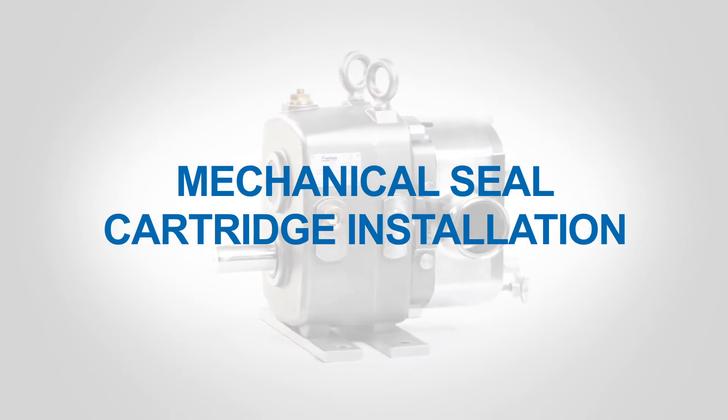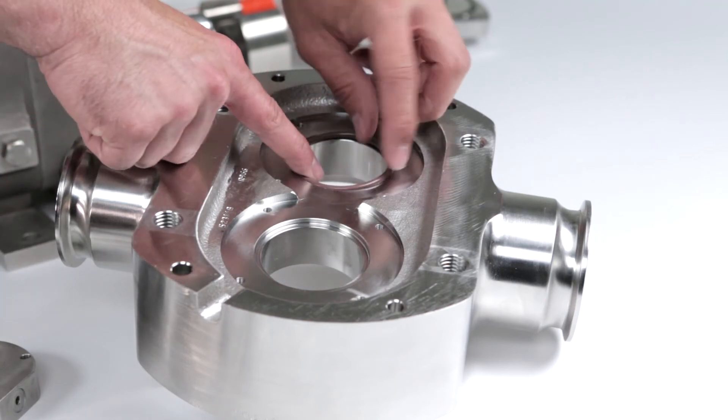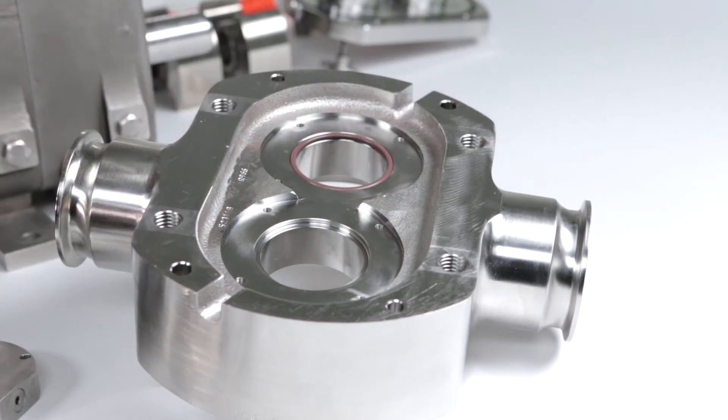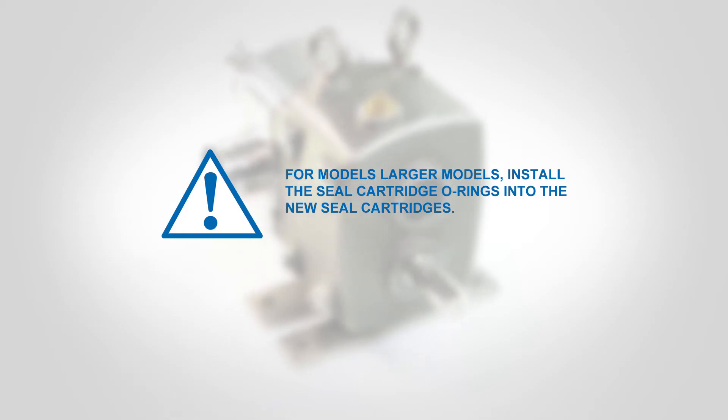Mechanical Seal Cartridge Installation. Place the pump housing face down. Install the seal housing o-rings into the grooves in the seal housing. For larger models, install the seal cartridge o-rings into the new seal cartridges.